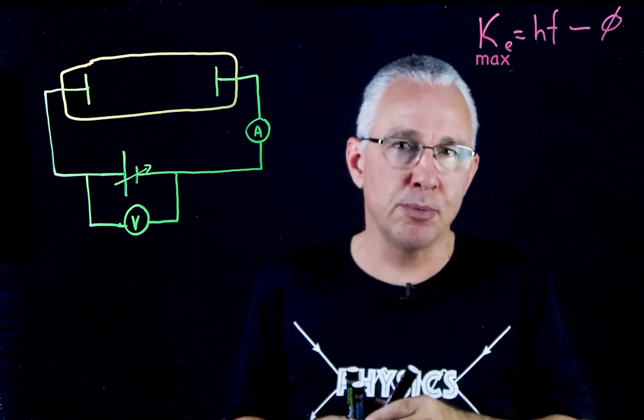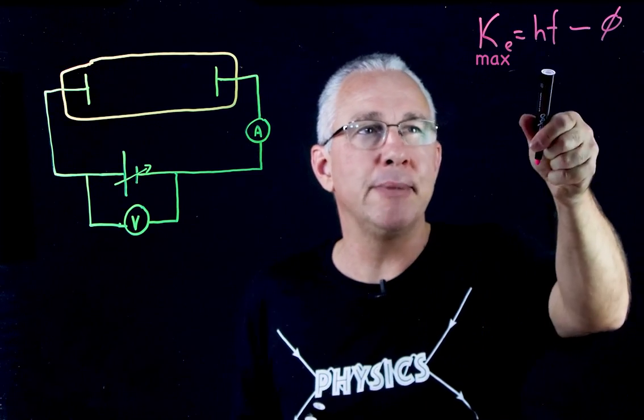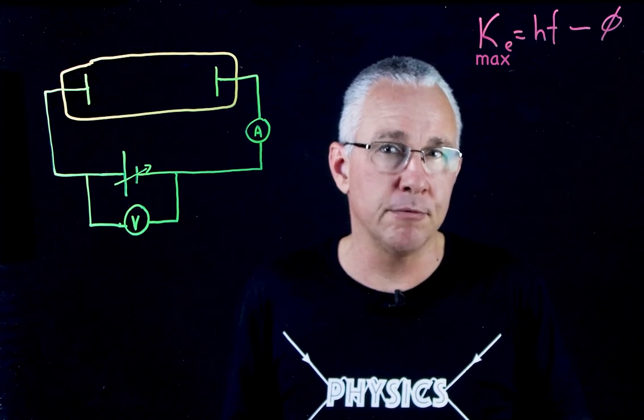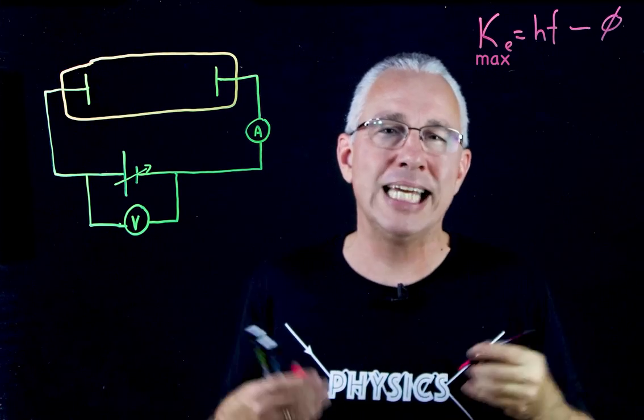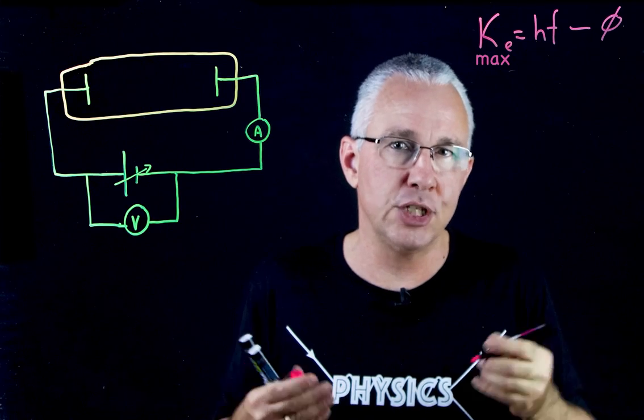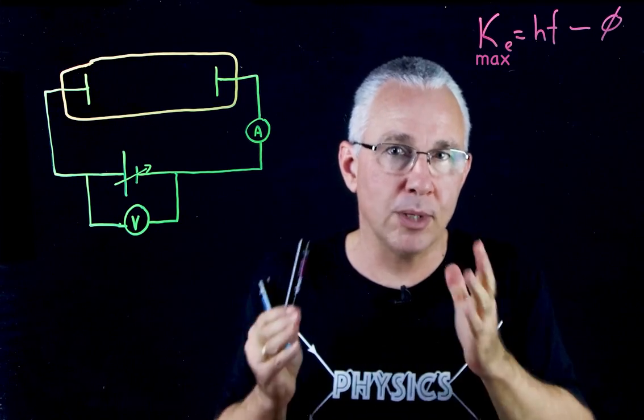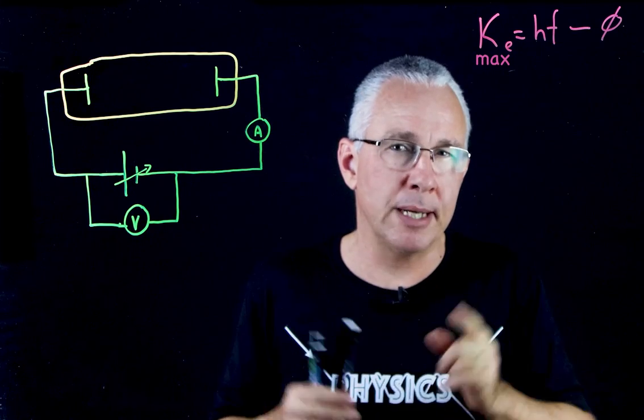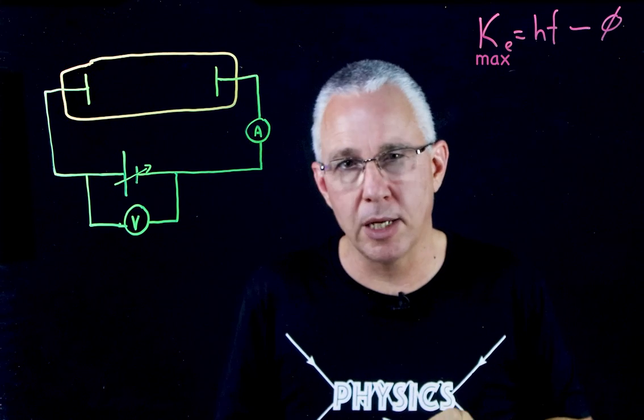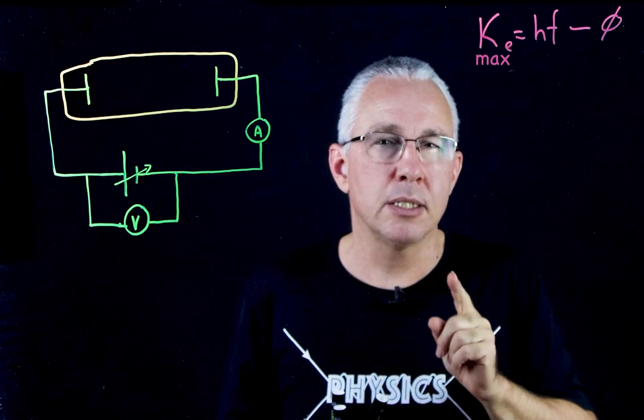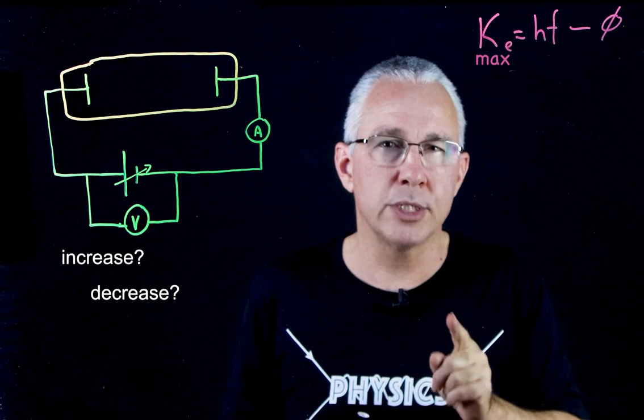Now most of you will probably understand that if I'm talking about the kinetic energy, because I am increasing the frequency of my photons and the work function does not change, I'm going to increase the kinetic energy of my photoelectrons. That is fairly obvious and most people understand that. But what about the rate of photoelectrons emitted, ensuring that I keep the intensity of my light source the same? Does the rate increase, decrease, or stay the same?